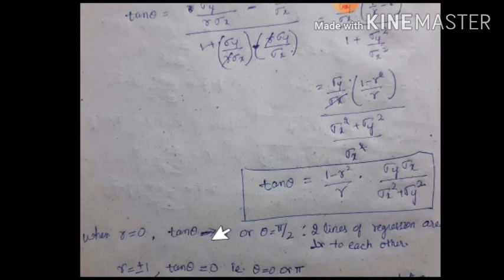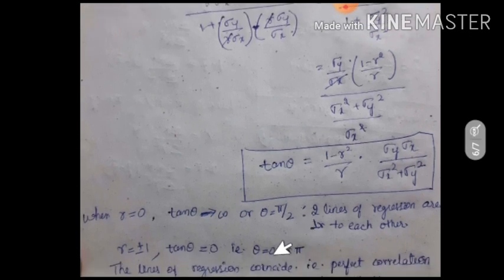When r equal to plus or minus 1, we get it as 1 minus 1 becomes 0. Tan theta is 0. Theta equal to either 0 or pi. What is the meaning of it? It means two lines, regression lines coincide. There is a perfect correlation between those two lines. Sorry, there is a perfect correlation between the two data x and y. When r equal to plus or minus 1, lines of regression will coincide.